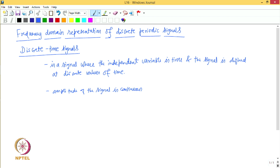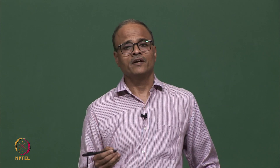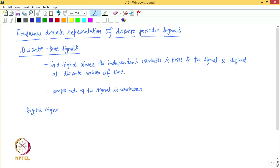But if the amplitude is also quantized and the discrete time signal is converted to a binary representation, then such a discrete signal becomes a digital signal. So in a digital signal the amplitude is also discretized and represented in binary form.